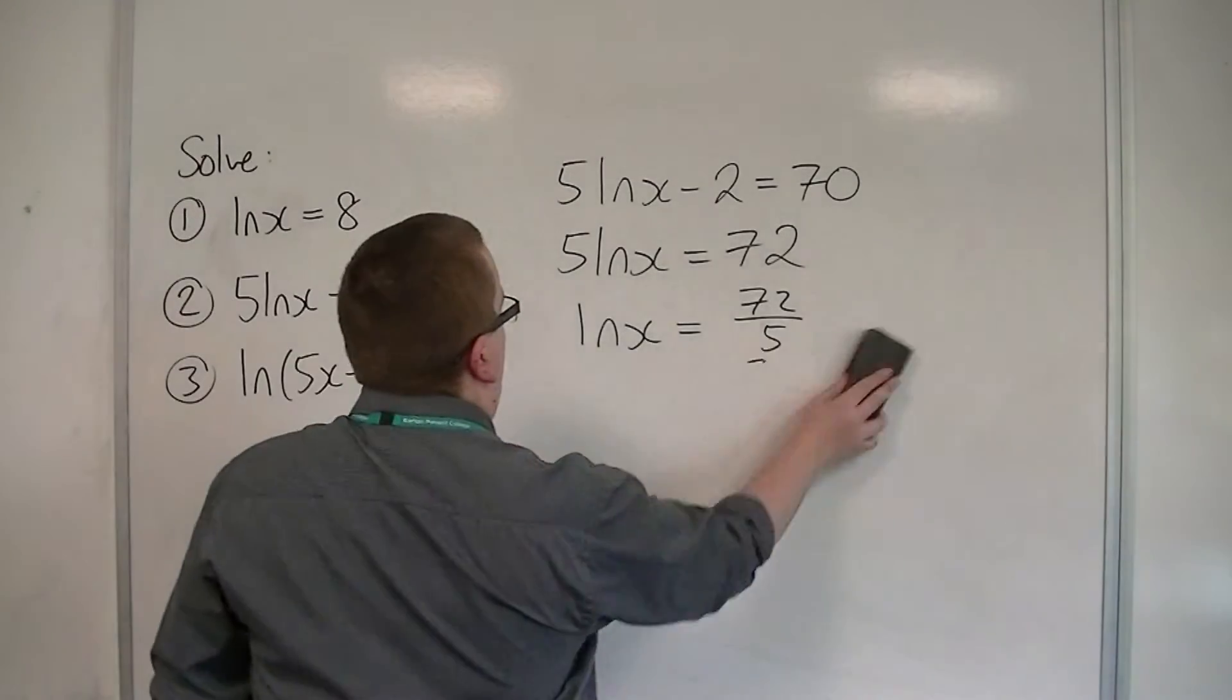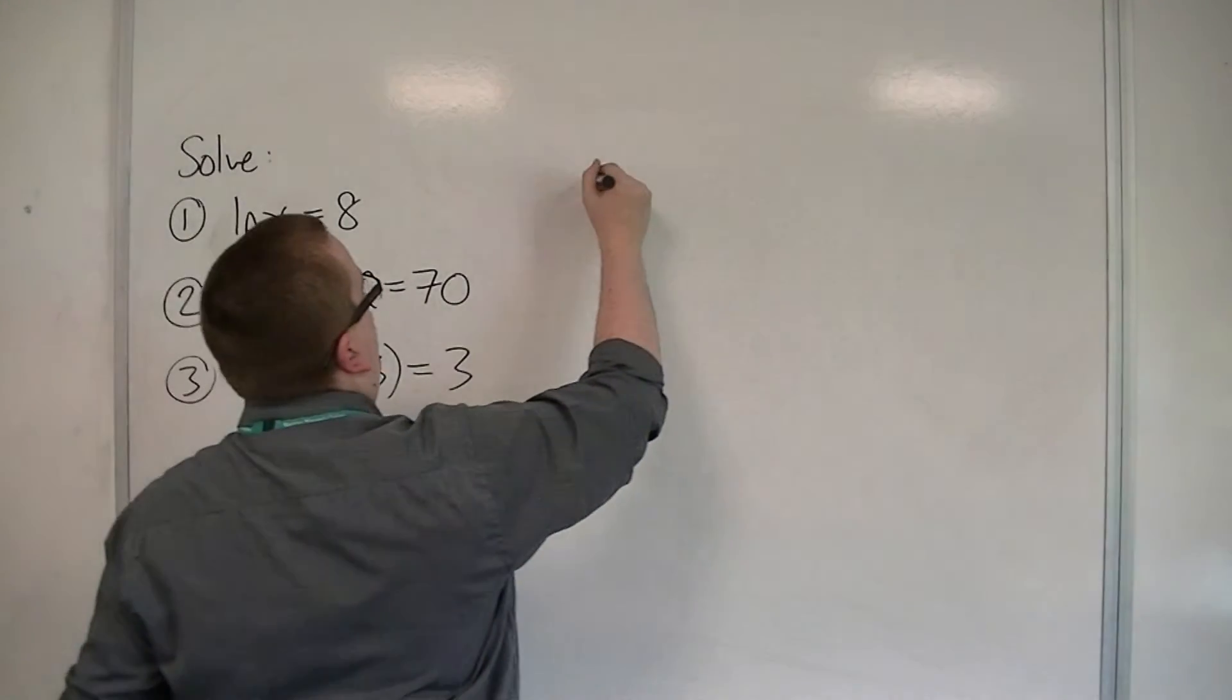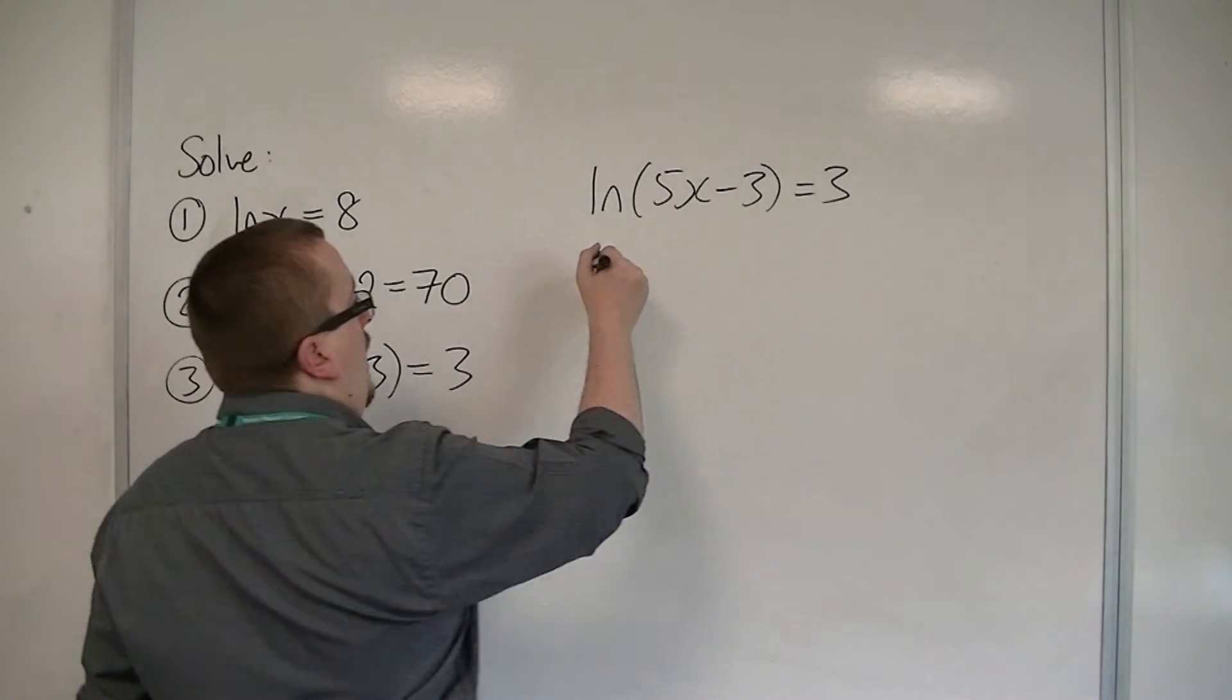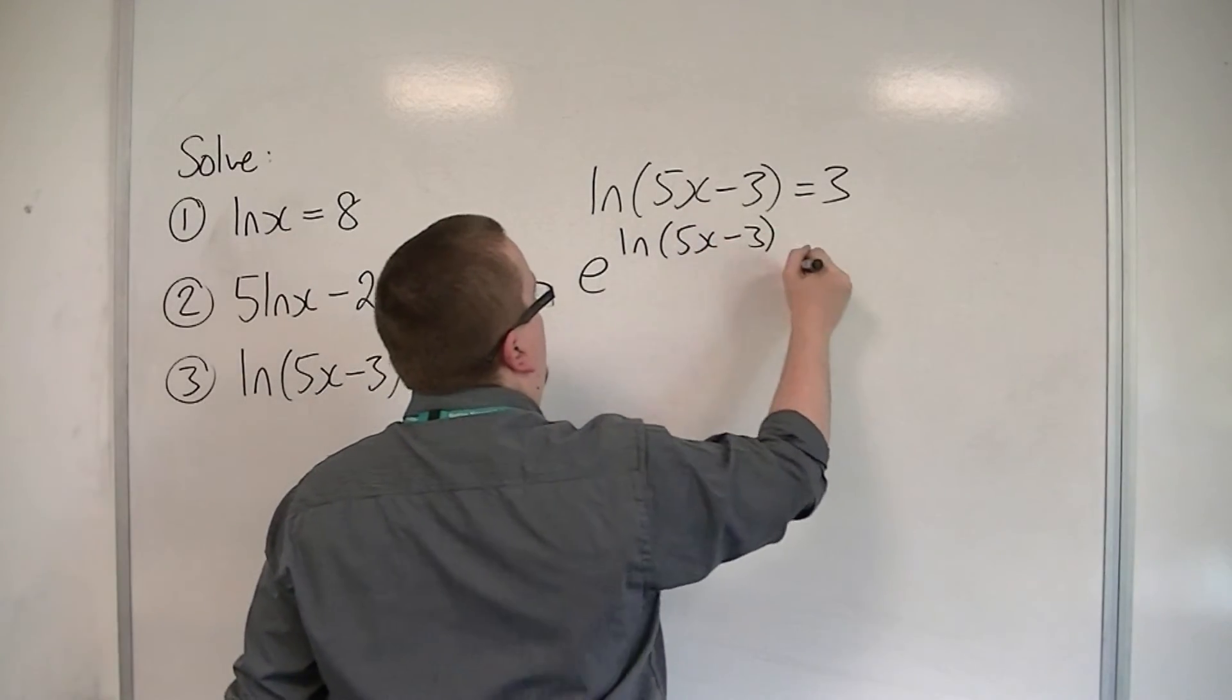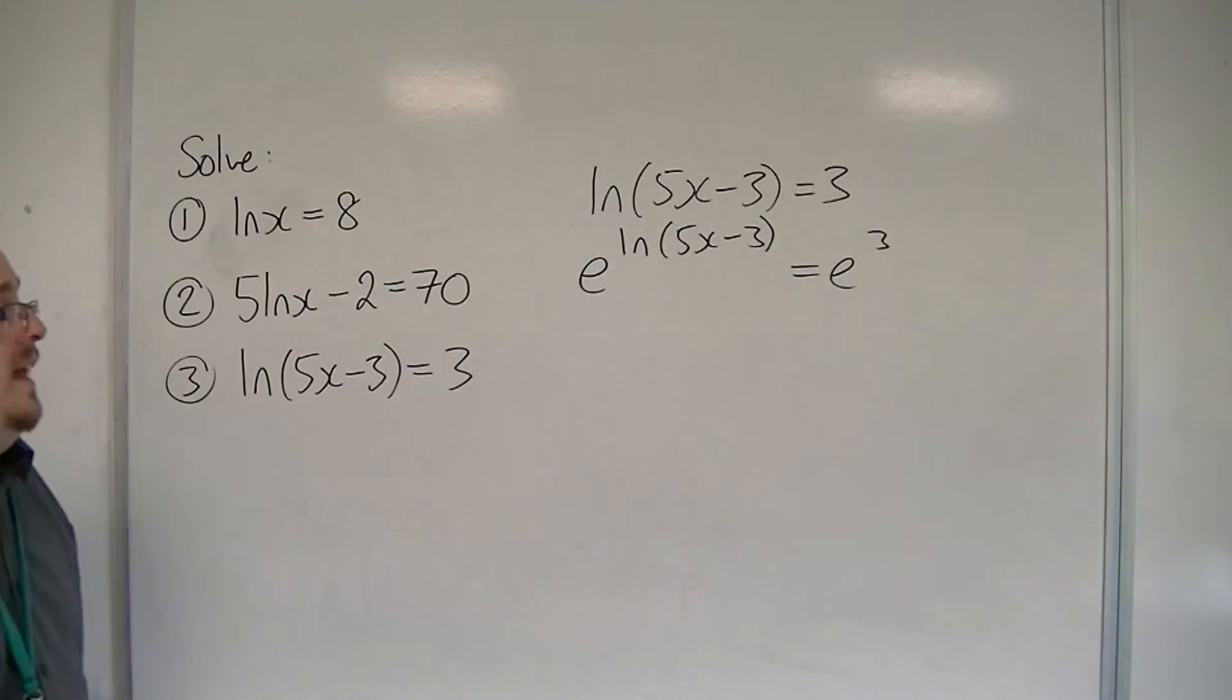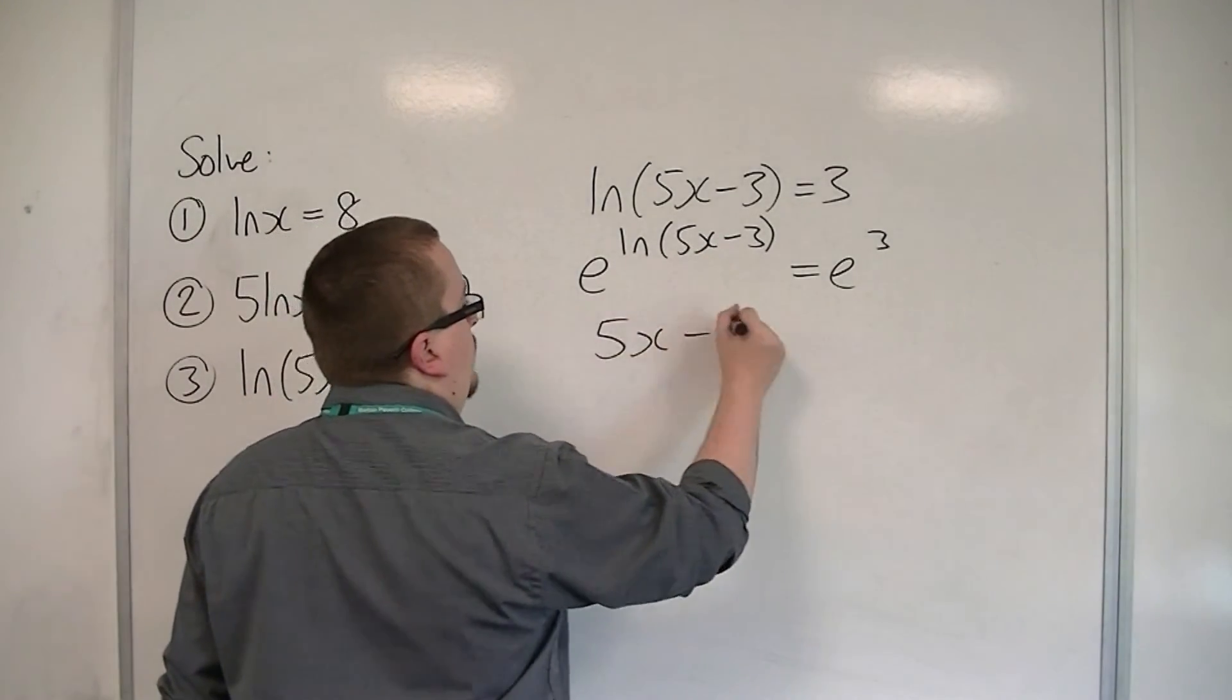Then we've got number 3. Log of 5x minus 3 equals 3. So what we're going to do here is we're going to e both sides. If I e log of 5x minus 3, and I have e to the 3 on the right-hand side, the e and the log are now next to each other. So they're going to cancel each other out, they're going to invert one another, and I'm just going to be left with that 5x minus 3.